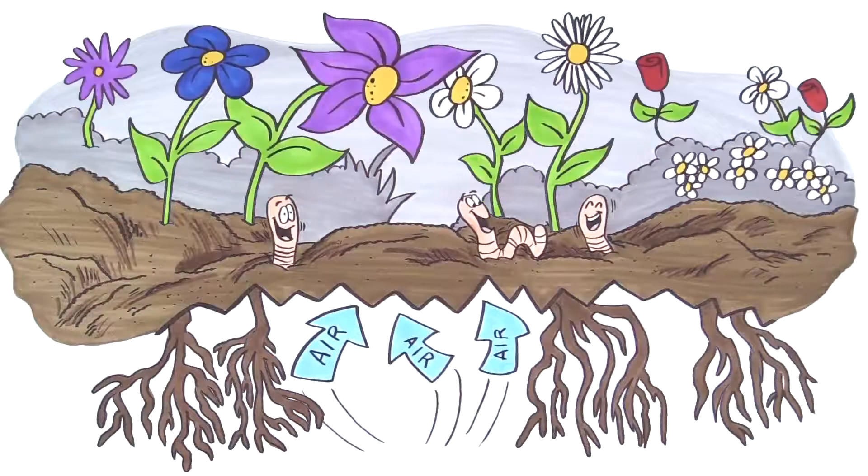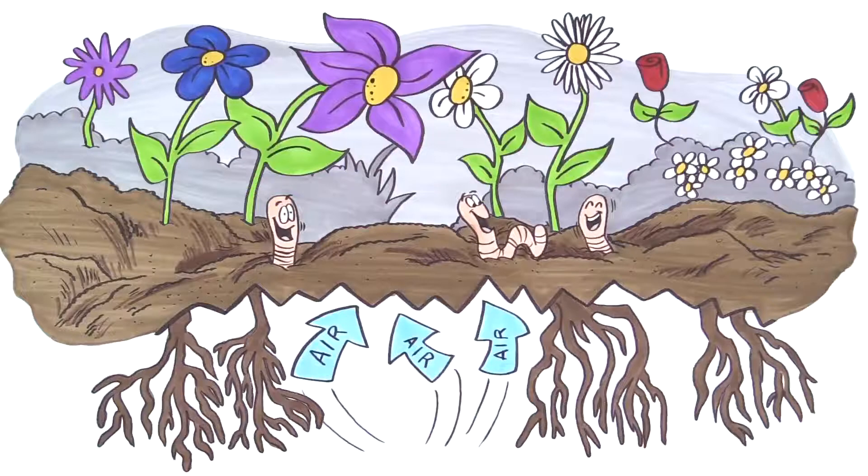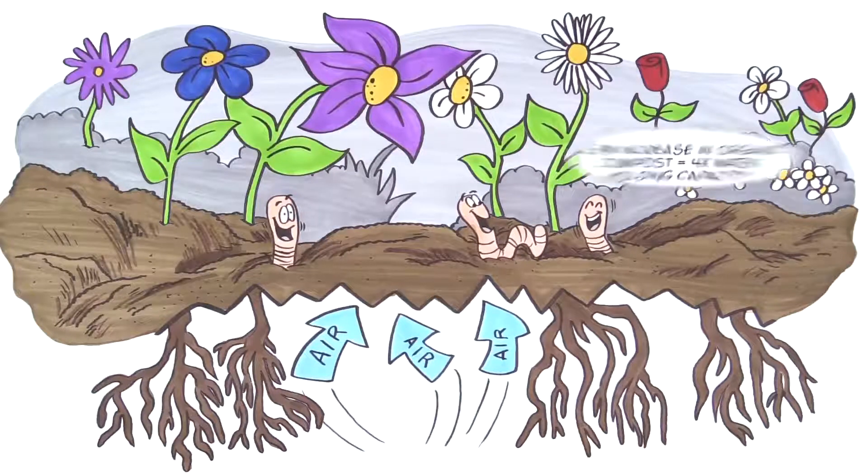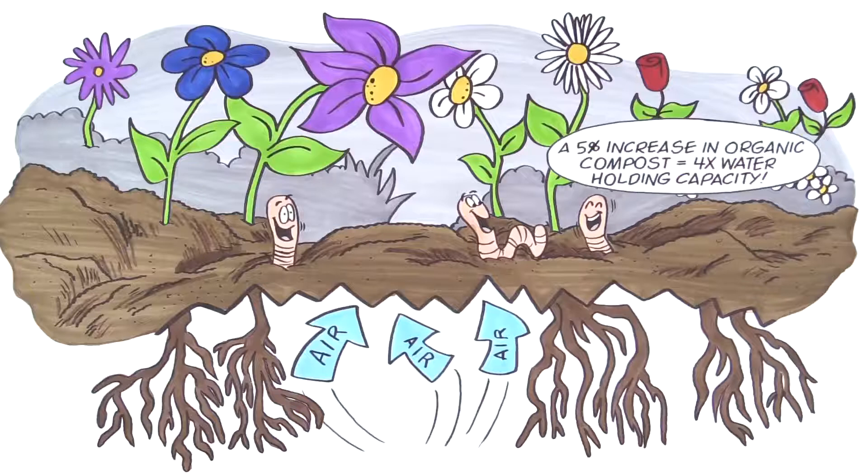As plants grow, their healthy root systems increase the soil's ability to retain water, decrease runoff, and reduce erosion. Just a 5% increase in compost quadruples the water-holding capacity of the soil.